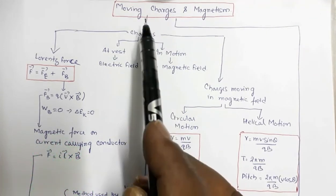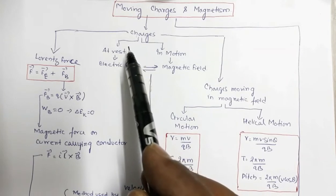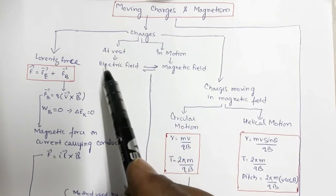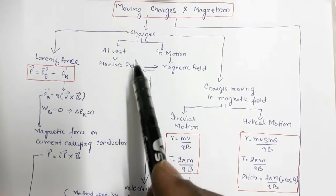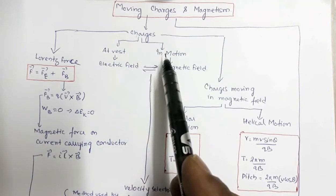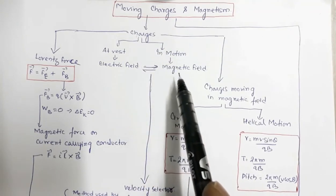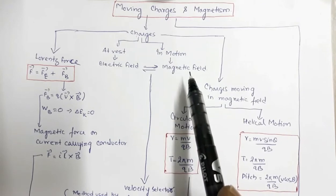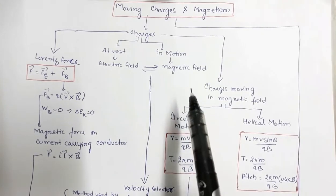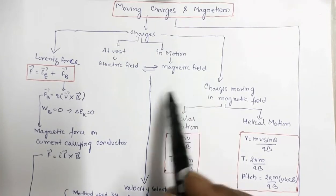This chapter starts with the concept of charges. These charges when they are at rest give rise to an electric field. Now the same charges when they start moving give rise to a current, which is associated with a magnetic field. This was first observed by Oersted — that is the Oersted experiment.